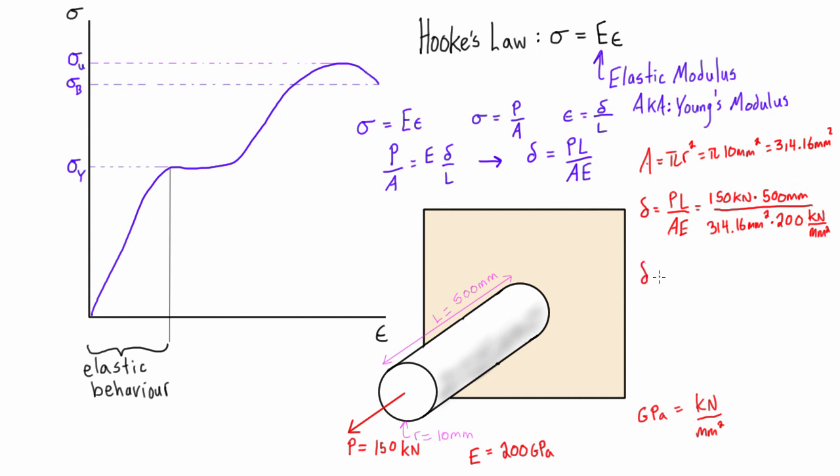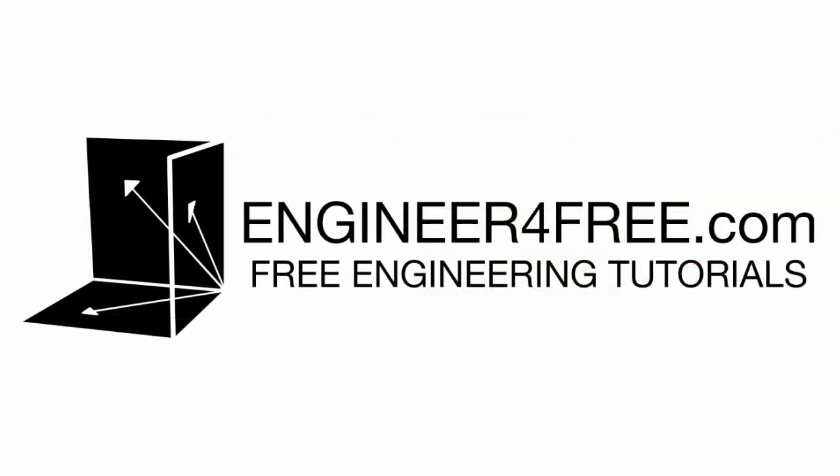So if we run that calculation, delta here equals 1.19 millimeters. And that's how much this rod would get stretched out if we applied this 150 kilonewton tensile force here.